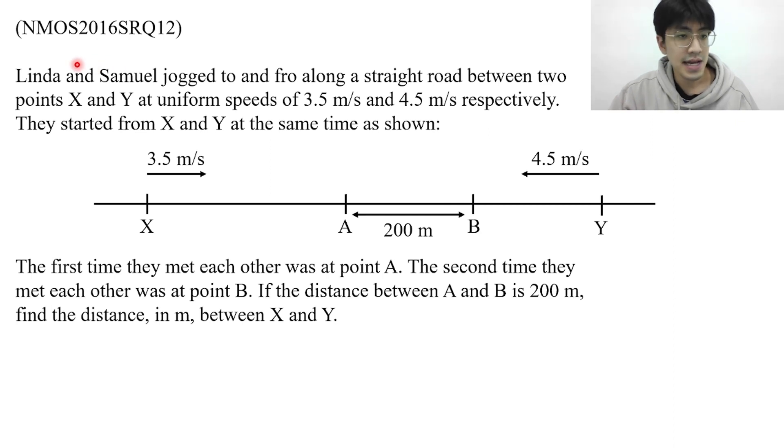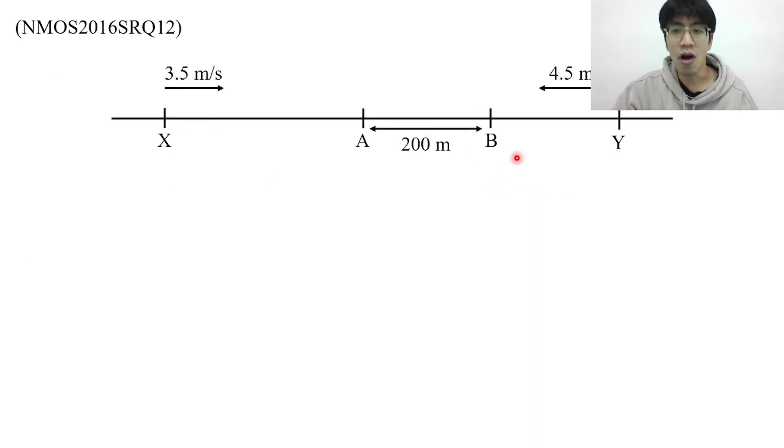Two friends Linda and Samuel jog to and fro along a straight road between two points X and Y at speeds 3.5 for Linda and 4.5 for Samuel. If they meet each other for the first time at point A and the second time at point B which is 200 meters away from A, then find the distance between X and Y. Let's see how we can approach this problem. First let me clear this screen so that we only have this diagram over here. Linda will be at point X and Samuel will be at point Y.